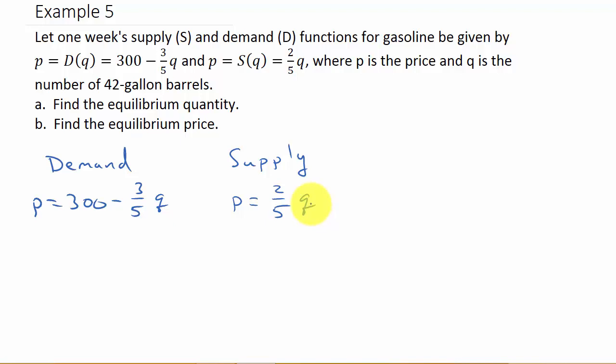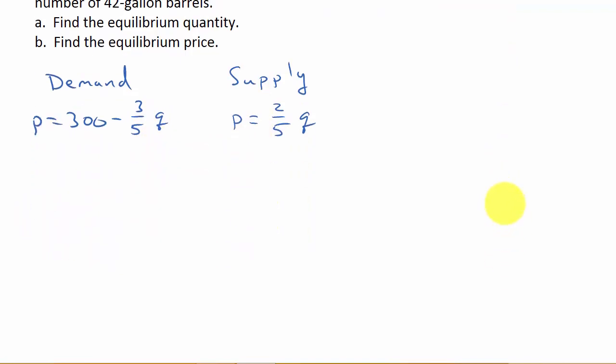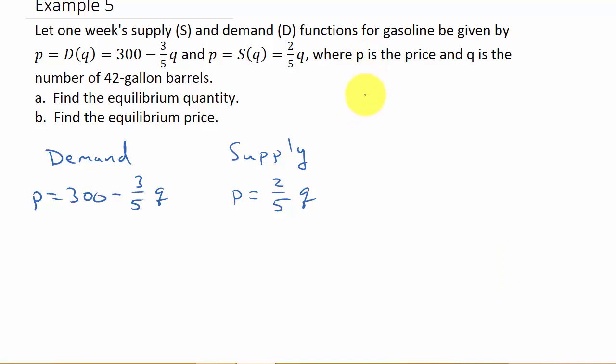They want us to find the equilibrium quantity and the equilibrium price. Q represents the quantity and P represents the price. I'm going to sketch this out, though it won't be really accurate.